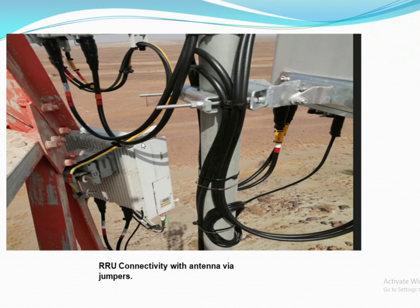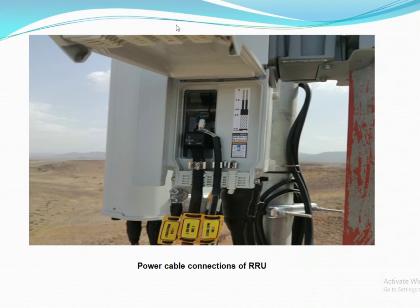Regarding RRU connectivity with antenna jumper wires: one port is for transmitting, one port is for receiving, and a third port is used for RET connections. From the right side of the RRU, a power cable is connected to power the device so it can radiate radio waves and RF signals, processing them to the RF antenna.